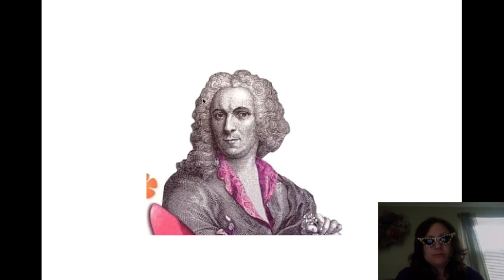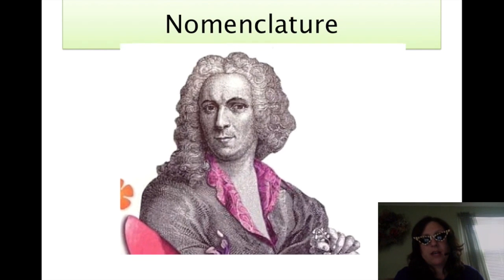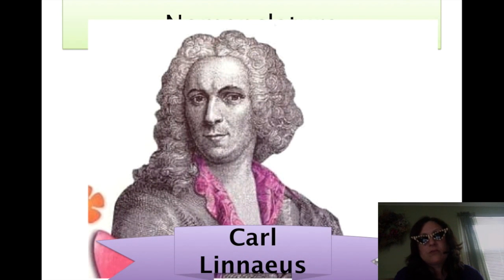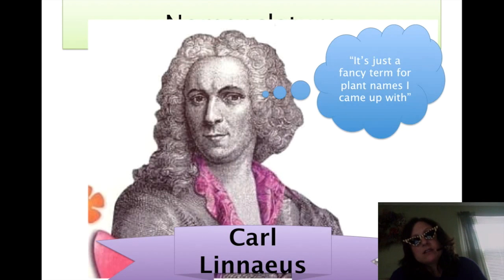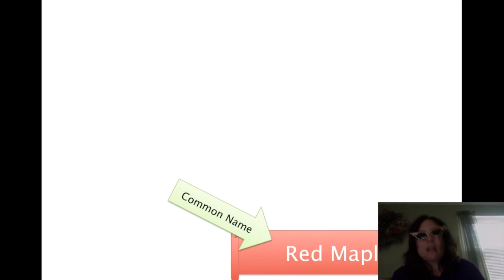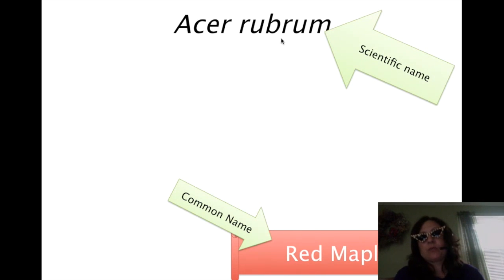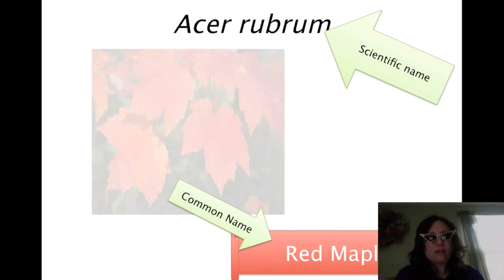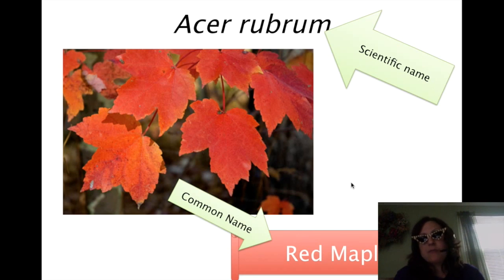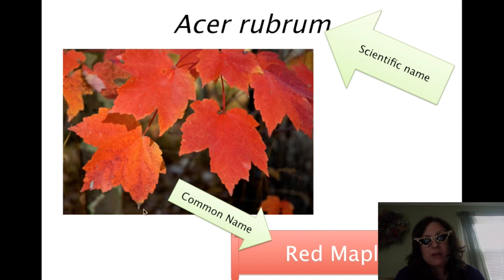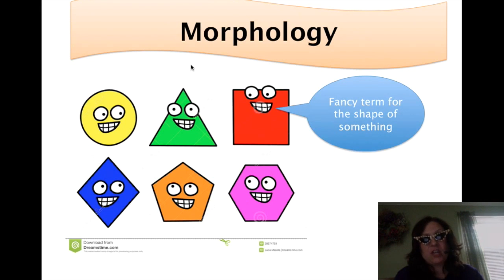This guy — you have him to thank for nomenclature. He is Carl Linnaeus, and he developed the system we now use for naming plants. Why do we need a system? Well, the common name is 'red maple,' but people would name plants whatever they wanted. Without a scientific name like Acer rubrum used consistently, we'd have issues, because plants are used for medicine, and using the wrong plant for the wrong thing could make people really sick.